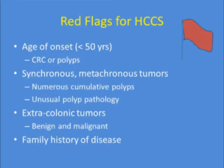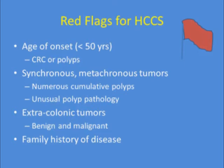The red flags for hereditary colon cancer syndromes include early age of onset — less than age 50 — of either benign or malignant lesions, specifically colorectal cancer or polyps. Also: individuals with synchronous or metachronous tumors, numerous cumulative lifetime polyps, unusual polyp pathology, extracolonic findings either benign or malignant, and a family history of the disease.